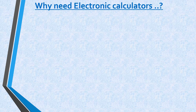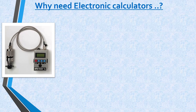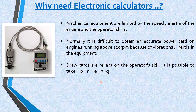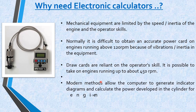Another issue is inertia — as RPM increases, the inertia becomes high, and in that case the mechanical device fails to produce correct diagrams. To overcome these limitations, we use electronic power calculators. Human intervention is very small — you don't have to pull a cord. You connect the device into your cylinder head indicator cock, it gathers the data, and you feed external data such as engine RPM and crank angle position. It will then measure and record the pressure against crank angle, store the data, and later you can connect a computer online or offline to produce a power card or draw card.